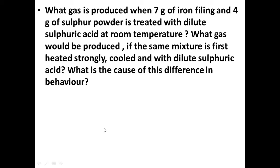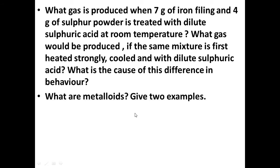What are metalloids? Give two examples. Narendra, roll number 36. Metalloids are the types of elements that have the properties of both metal and non-metal. They have intermediate properties of metal and non-metal. Examples are silicon and germanium.